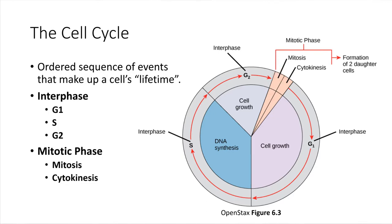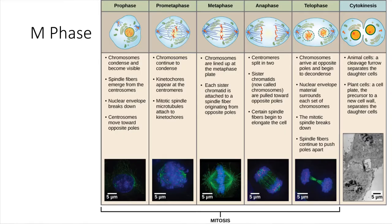During mitosis, there are some key things that take place. Mitosis always has these same steps, and they always happen in the same order. At the very beginning of mitosis, we have what's called prophase. Pro means before or in front of, so this is the first phase.